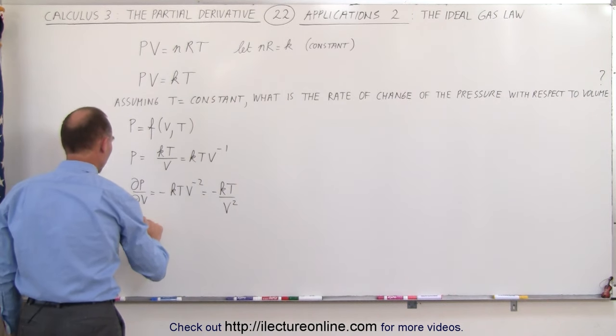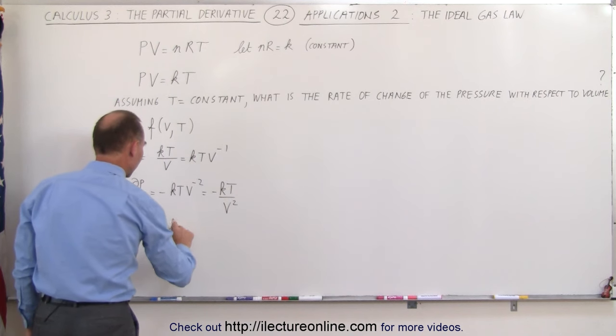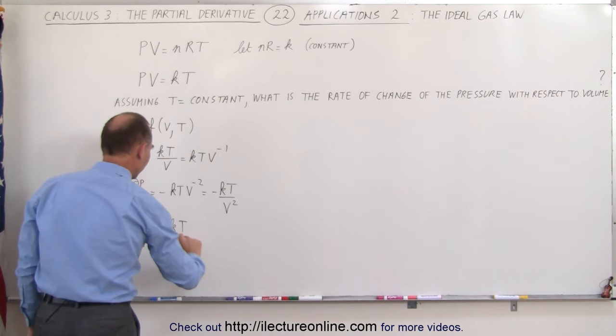The rate of change of the pressure with respect to the volume is equal to minus KT over V squared.